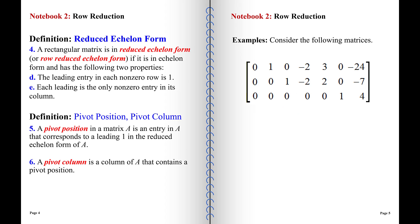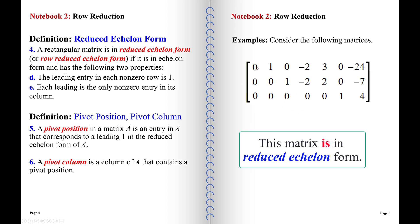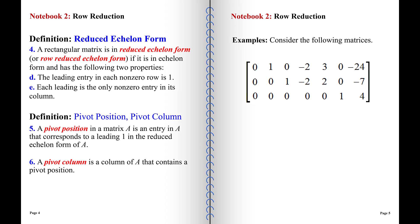Another example: can a matrix in reduced echelon form have an initial column of zeros? Yes. First checking whether it's in echelon form — it is, with zeros below the leading entries. Do we have zeros above the leading entries? Yes. Are all the leading entries one? Yes. This matrix is in reduced echelon form.